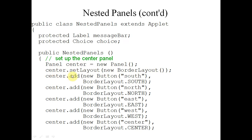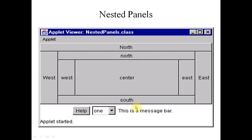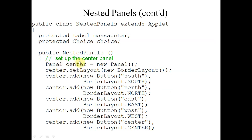Now we add five buttons to the center panel: center.add(new Button('south'), BorderLayout.SOUTH), center.add(new Button('north'), BorderLayout.NORTH), center.add(new Button('east'), BorderLayout.EAST), center.add(new Button('west'), BorderLayout.WEST), and center.add(new Button('center')). So in north, south, east, west, and center we have buttons — all developed within the center panel object. By these statements we create the center panel.